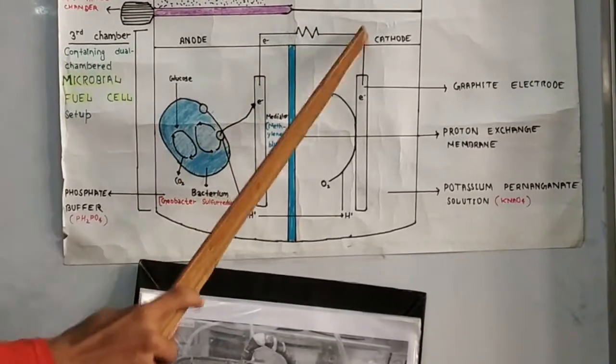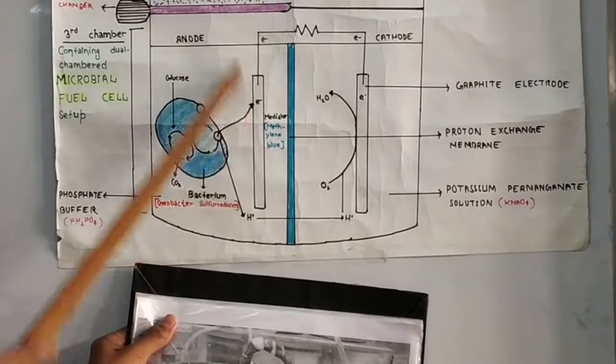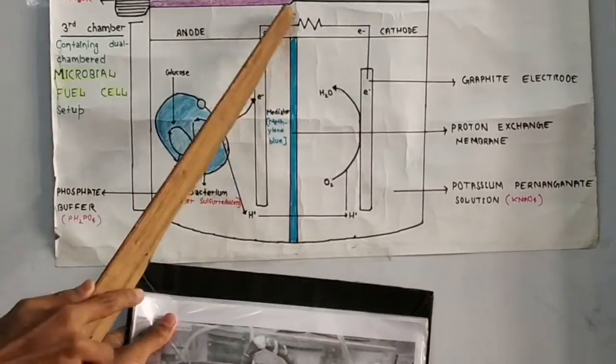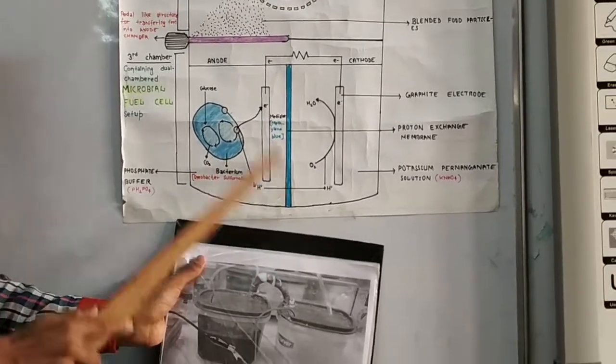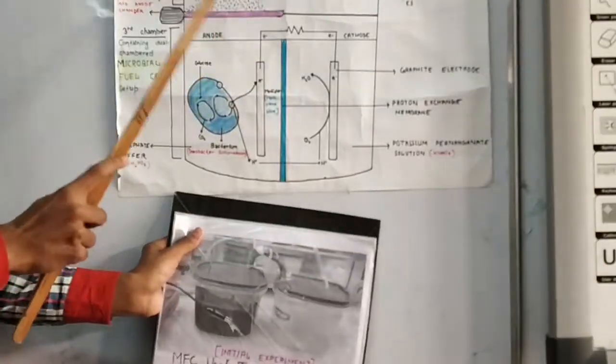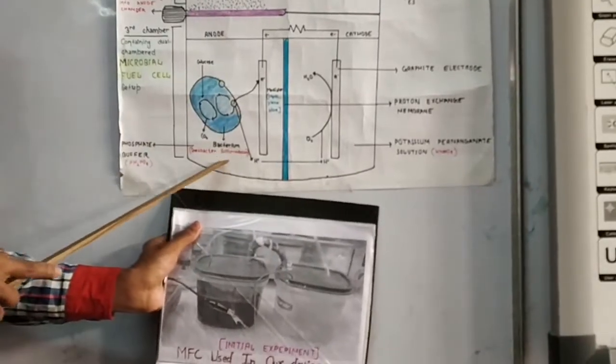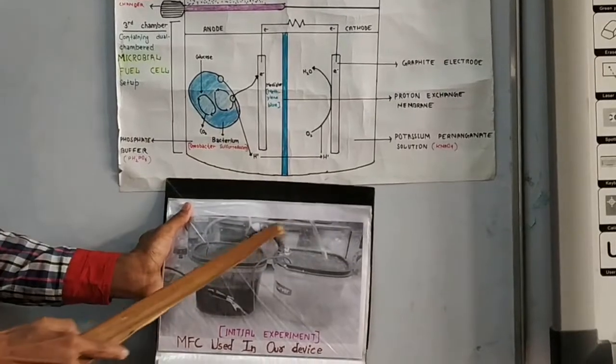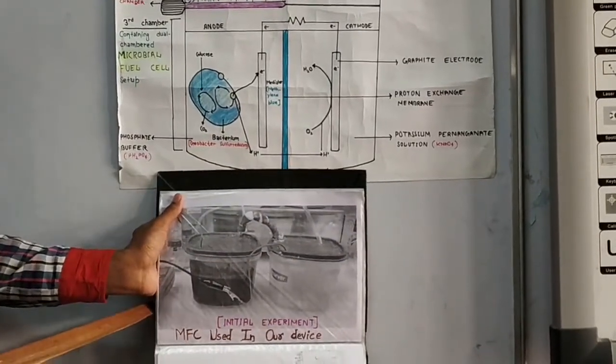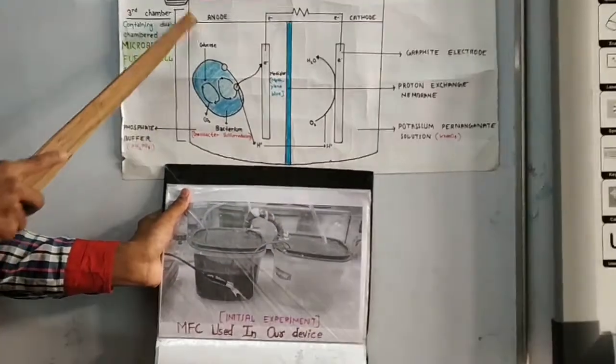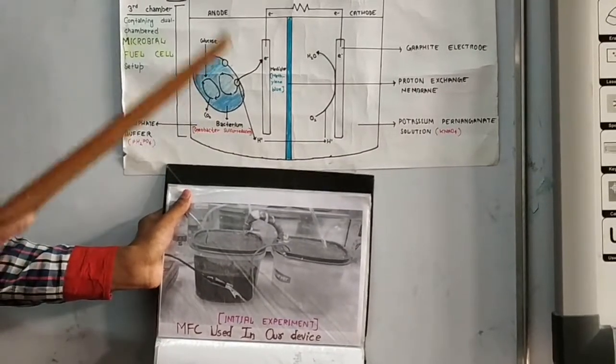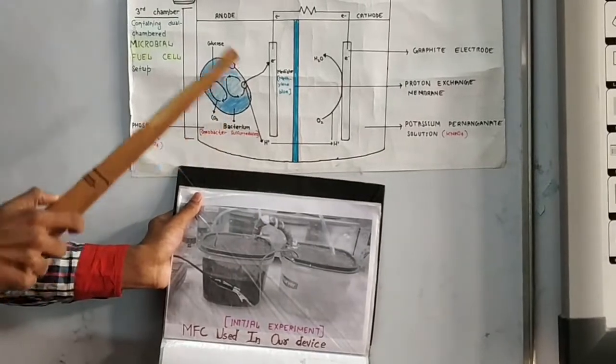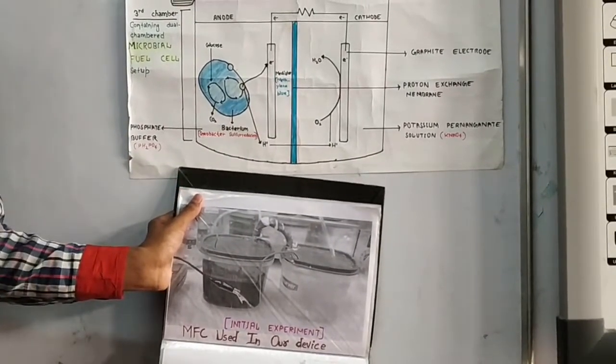Here we have two electrodes, a graphite rod which is working as the electrode. Between the anaerobic and aerobic chambers, we have put a proton exchange membrane. Through this setup, we will add food waste in the anaerobic chamber. You can see this setup in the photograph.